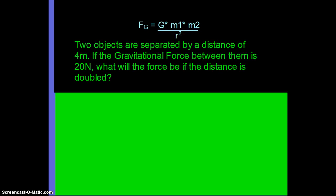So let's say two objects are separated by a distance of 4 meters. If the gravitational force between them is 20 newtons, what will the force be if the distance is doubled? So what effect will, I'm writing in black pen, what effect will doubling the distance do to this problem? Well, let's see, you'd be dividing by a larger number.